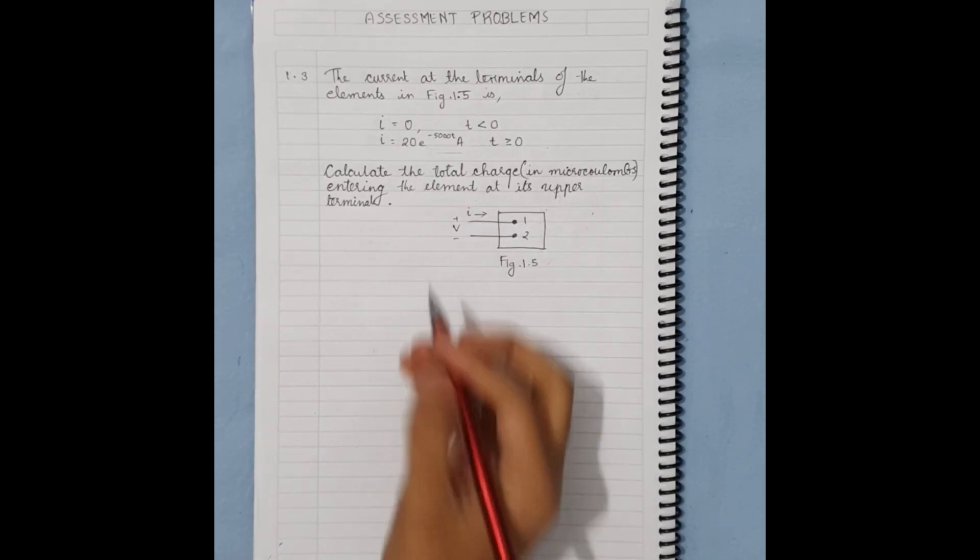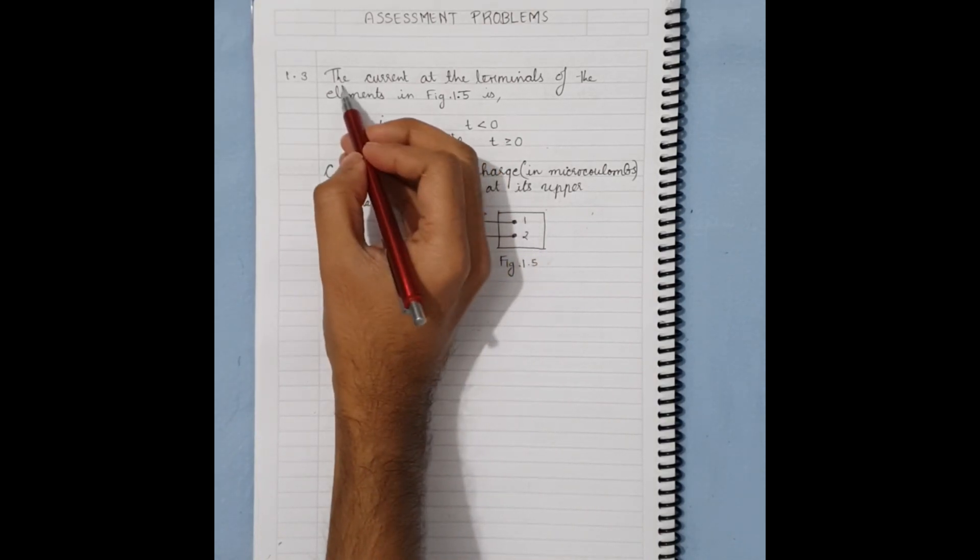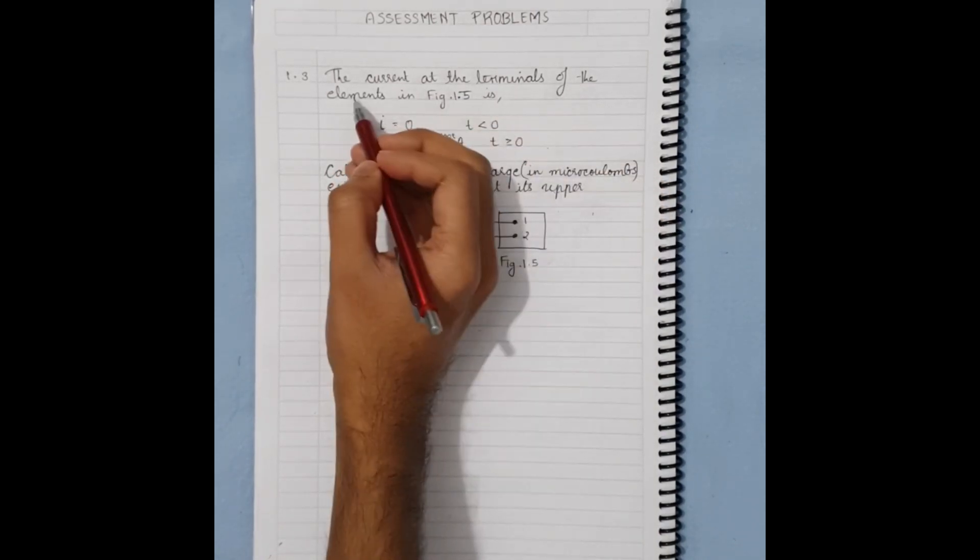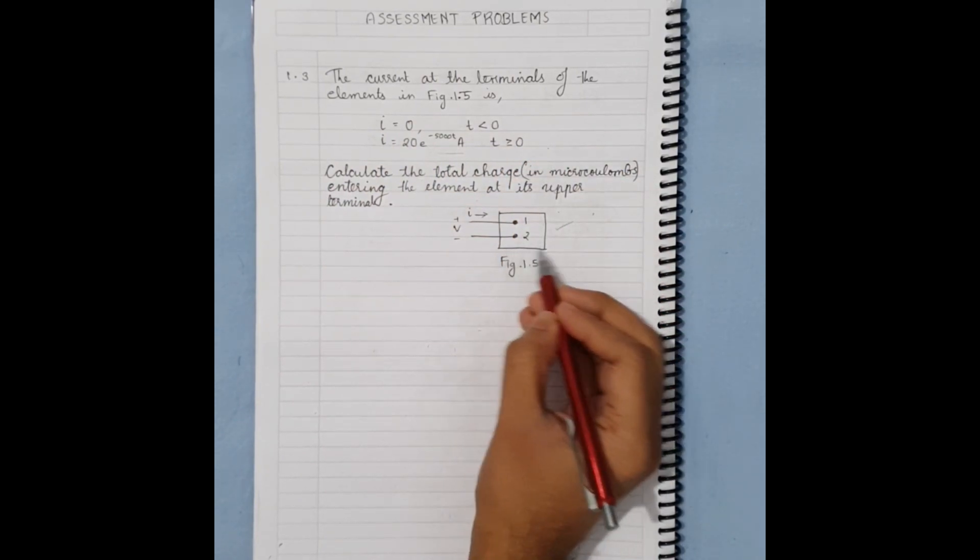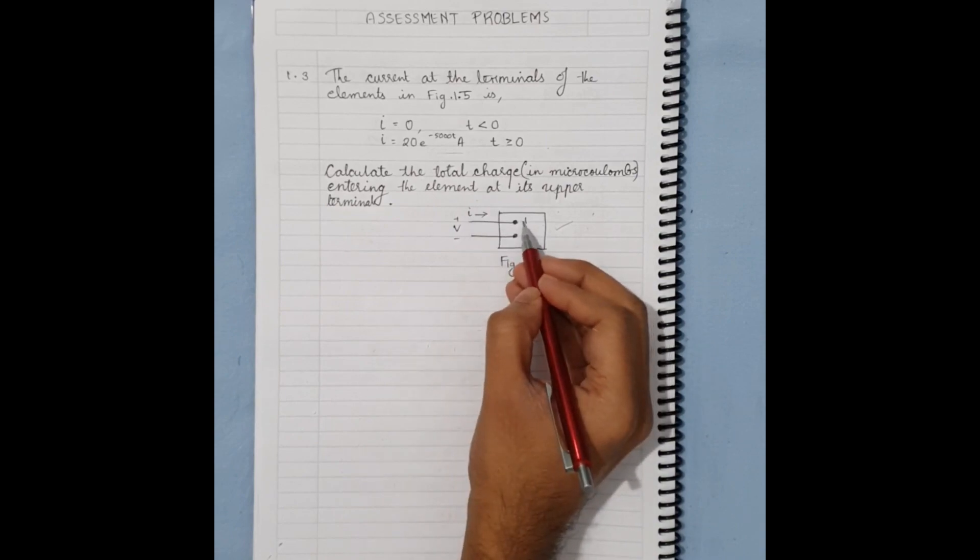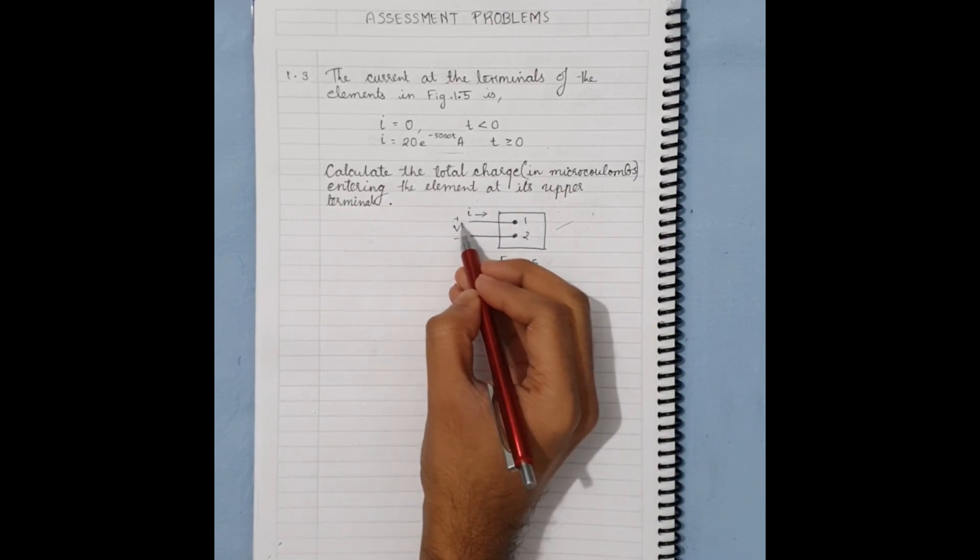So let's read the question. The current at the terminals of an element in Figure 1.5, this is Figure 1.5 which is a basic ideal circuit with two terminals, shows a voltage drop and a current flowing.